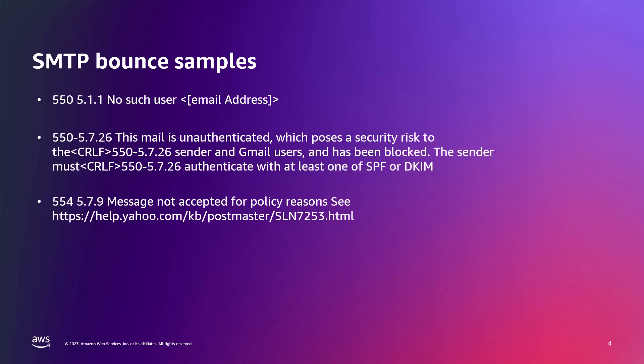Another example is this 554 bounce for policy reasons. Many SMTP responses can be broad, but they are all indicators that the recipient mail server does not like something about either your list, the content, or the responses by the users to your messages. In this case, the policy could have been a breach in a threshold for a metric like complaints. Typically, a mailbox provider will have a Postmaster page with reasons for certain SMTP responses. This is generally the best place to start your review on how to align with their email policies to deliver messages to their users.